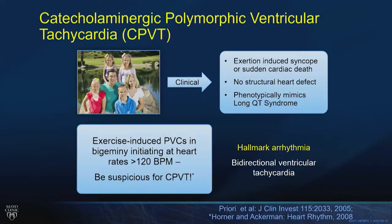Don't wait for bidirectional VT. If you have a patient with exercise-induced syncope, exercise-induced seizures, or exercise-induced sudden cardiac arrest with a normal resting ECG, put them on the treadmill. We are dismissing too many young sudden cardiac arrest survivors who never got a stress test. On the stress test, normal rhythm until heart rate 120-130, then PVCs in isolation, progressing to PVCs in bigeminy, couplets, or bidirectional couplets — that's CPVT. We don't have to wait for pathognomonic bidirectional ventricular tachycardia.